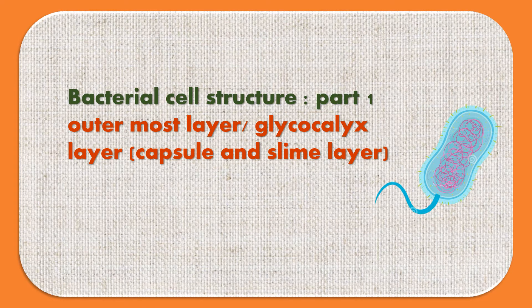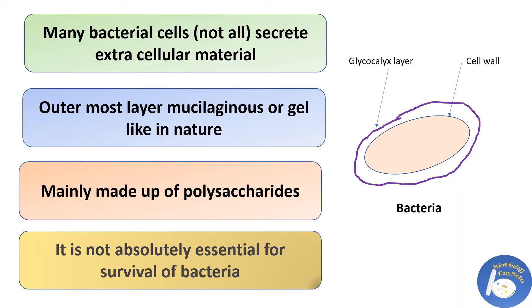In this tutorial we are going to cover the first part of the bacterial cell, that is the outermost layer or glycocalyx layer. Many bacterial cells — not all — secrete extracellular material which is mucilaginous or sticky in nature. This material forms the outermost layer of bacteria and is mainly made up of polysaccharides called glycocalyx.